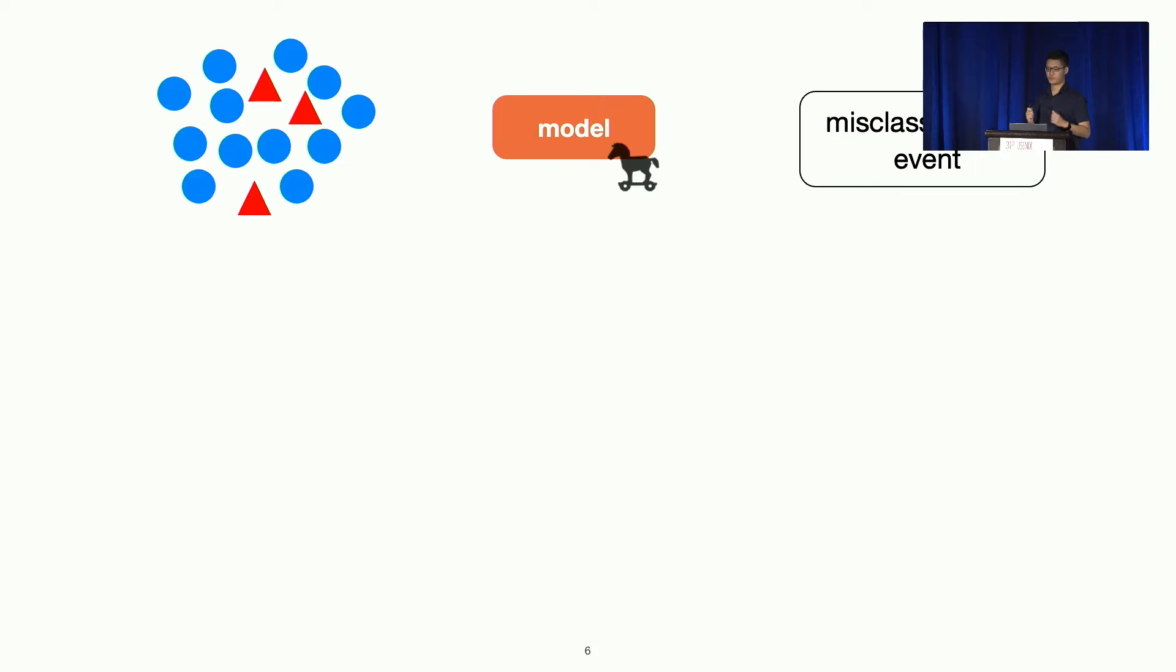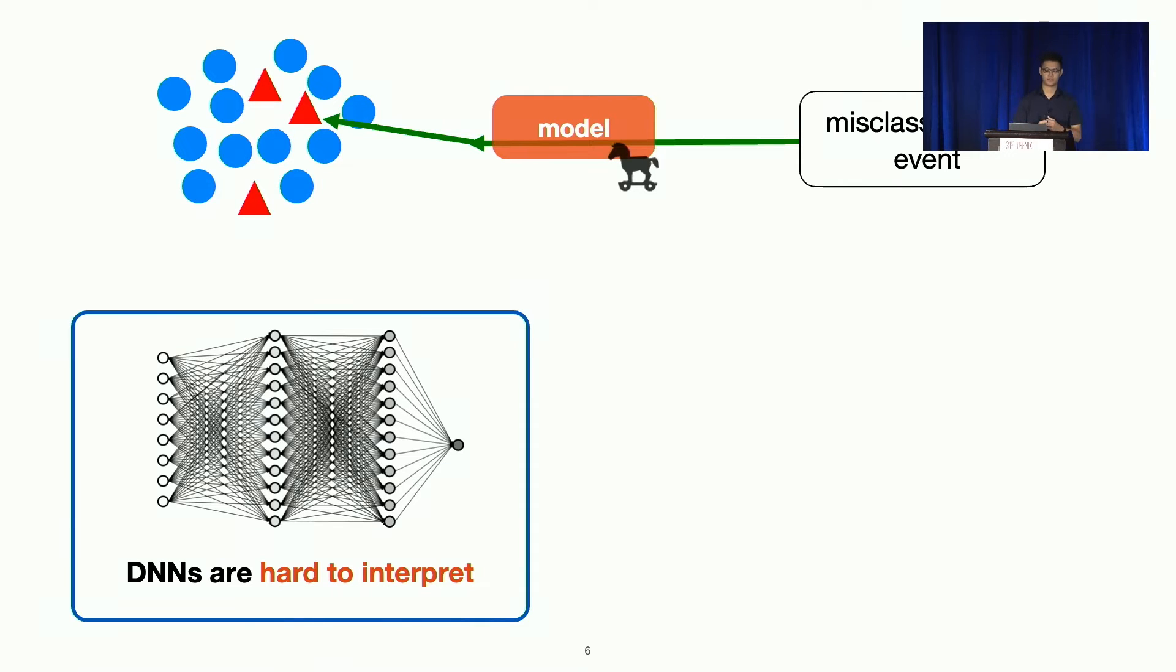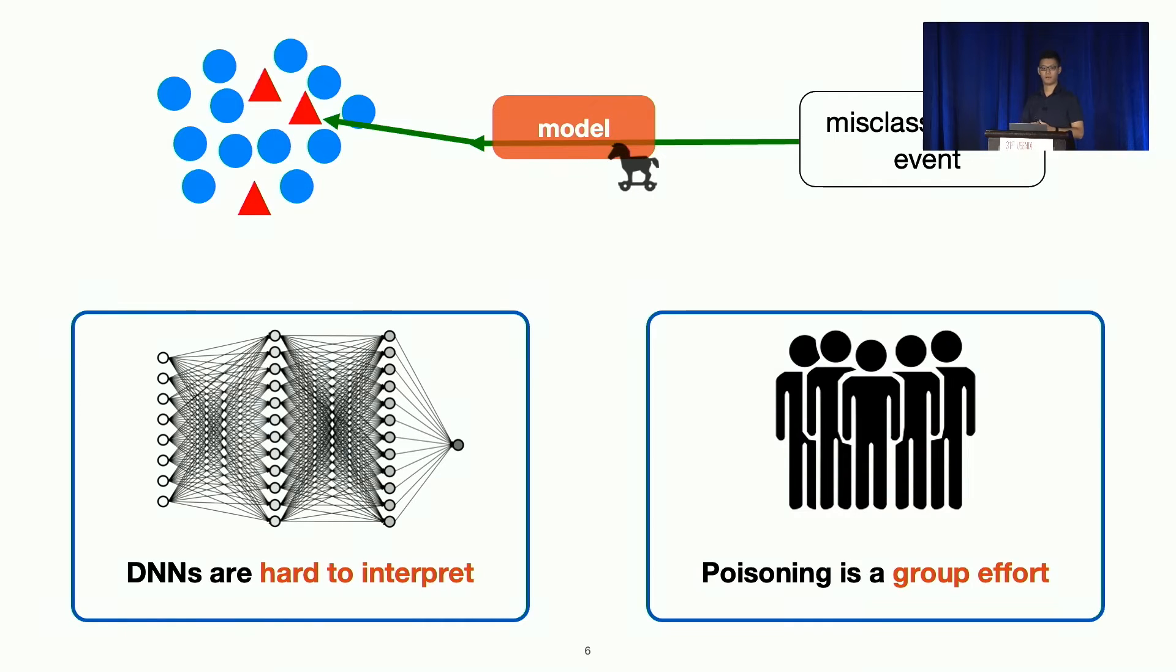So how does this work? It may seem straightforward. Basically, all we need to do is to analyze, go from this attack to the model parameters that are malicious and look at the training data that impact these model parameters. But this is actually pretty hard to do, mostly because deep neural networks, as we know, are very hard to interpret, very hard to understand. It's hard for us to say anything deterministic about how training data impact the model parameters and how the millions and billions of parameters impact the misclassification.